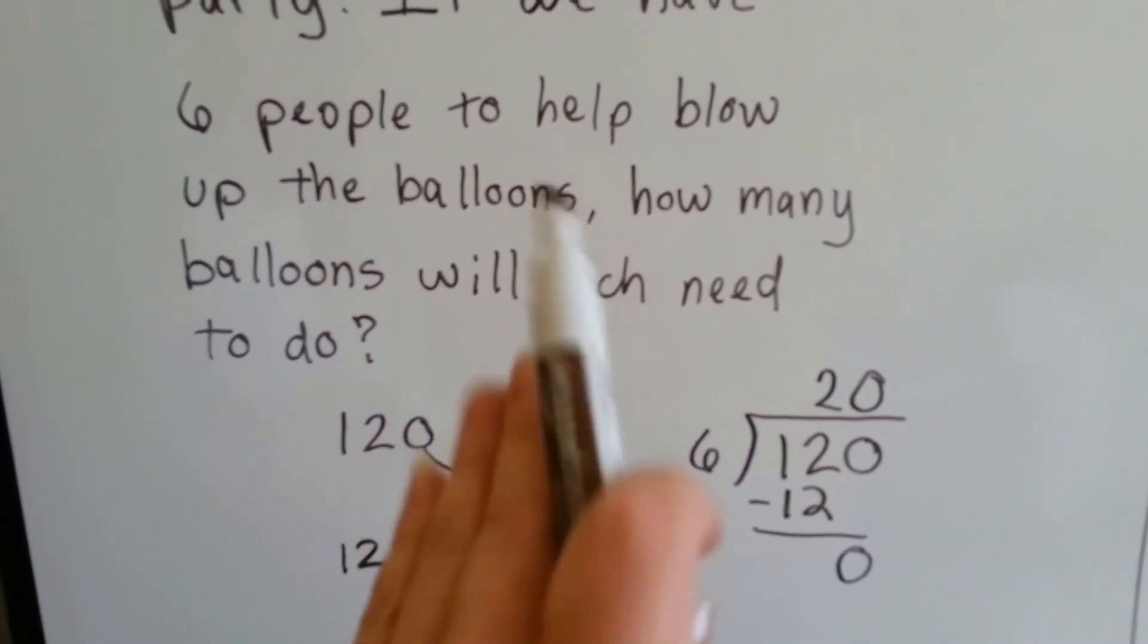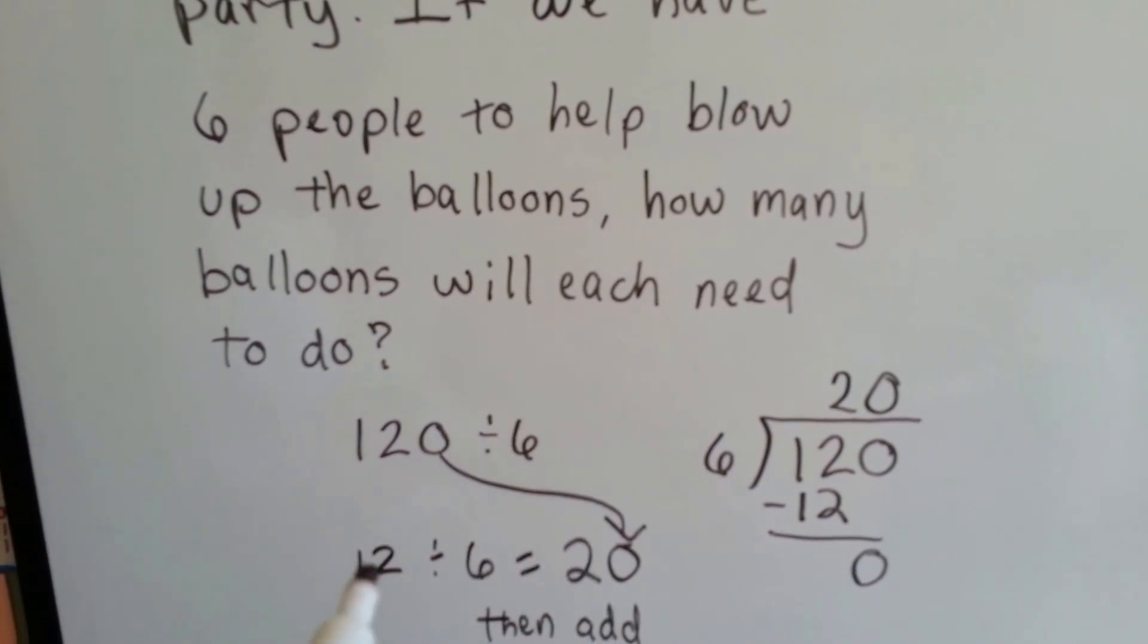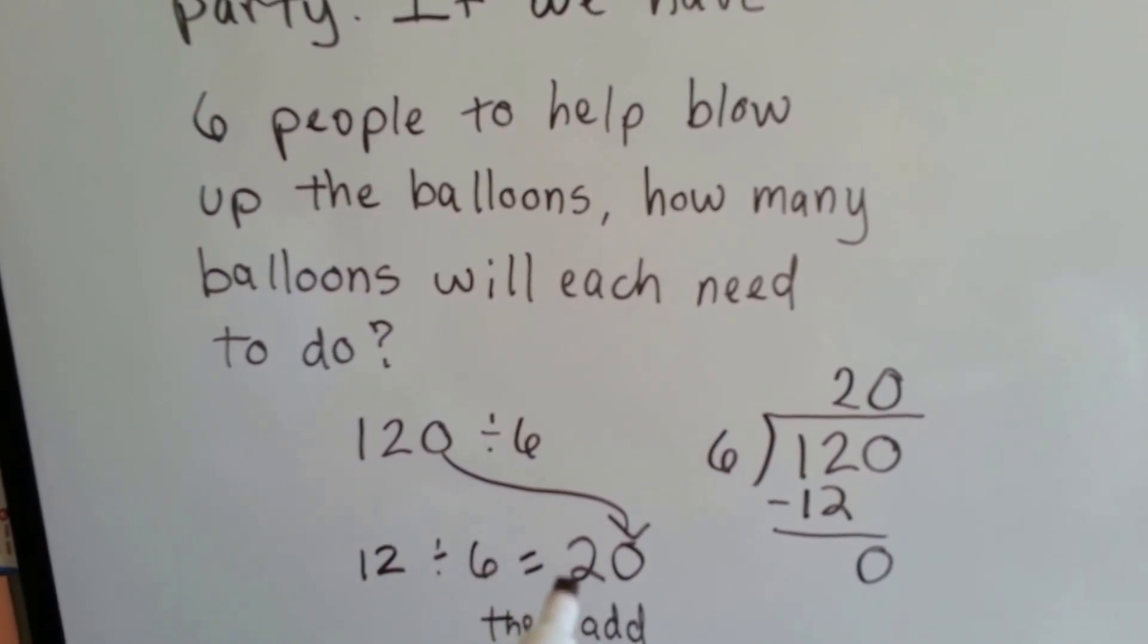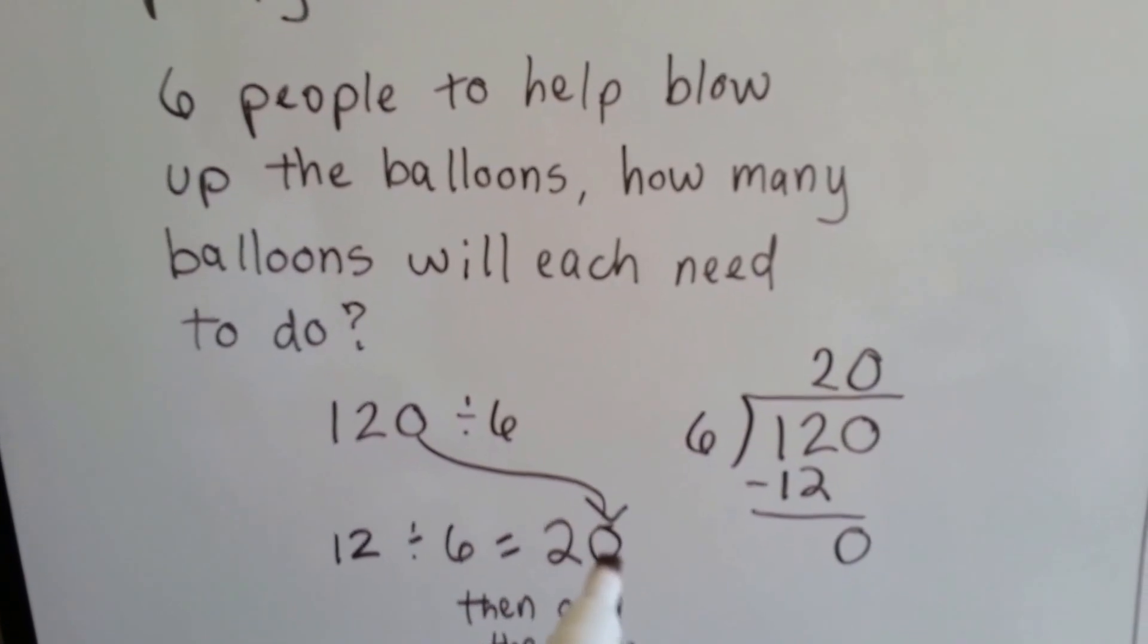We take the 0 off. We ignore the 0 and say 12 divided by 6, which is 2, and then we add the 0 after.